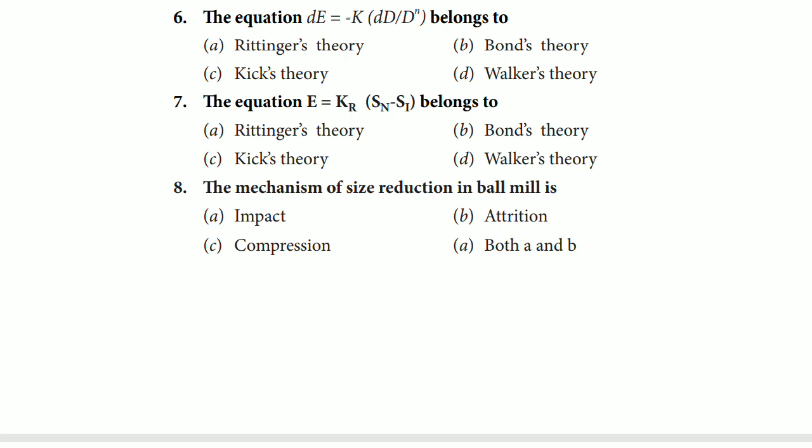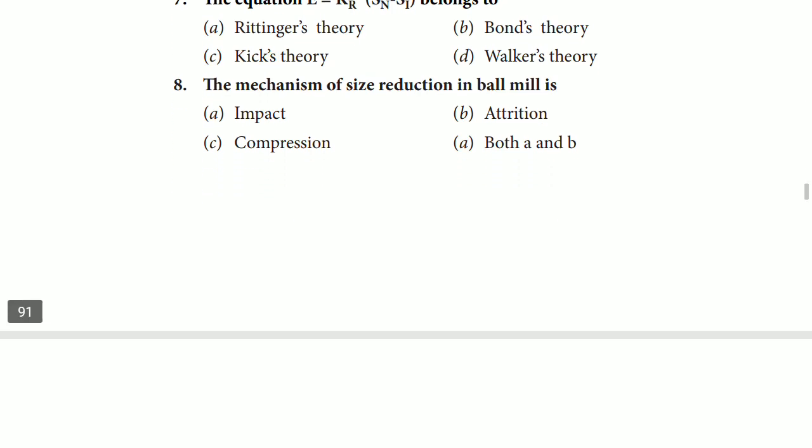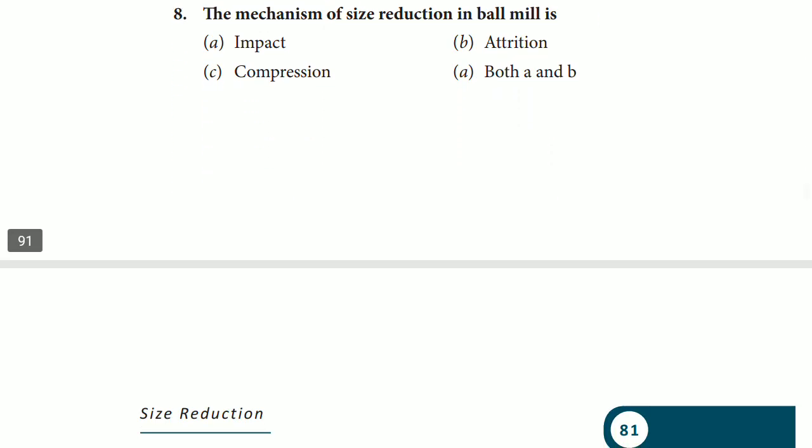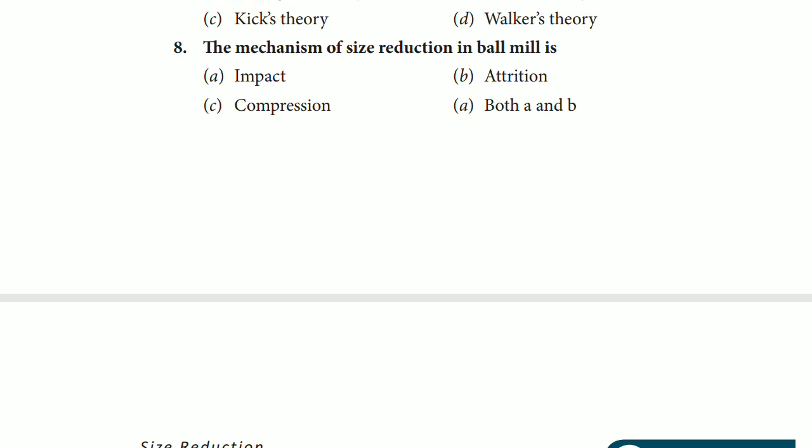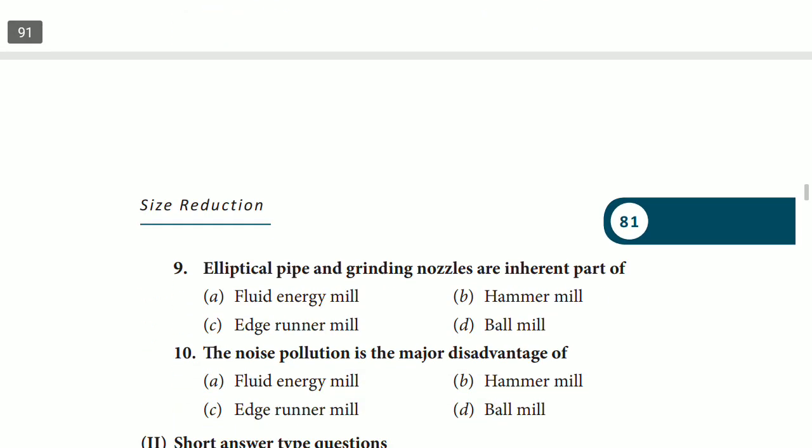Next question is question number 8: the mechanism of size reduction in ball mill is impact, attrition, compression, or both A and B. As we have already discussed, both ball mill and hammer mill have both the mechanisms that is impact and attrition both. So the correct answer is option D, both A and B.